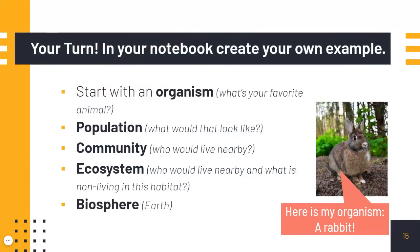Now it's your turn. In your notebook, can you create your own example? Start with an organism — what's your favorite animal? What would it look like in a population? Who would live nearby in its community? What does it eat? Who does it interact with? What would the non-living factors in this habitat be? And then the earth. Write this in your notebook — it'll be a good way to start next class to see how you did.